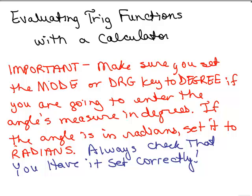Usually there is a key, either a MODE or a DRG key. If you want to enter the angle in degrees, you've got to make sure you have set that in degree mode. If you're going to enter an angle in radians, you're going to set it to the radian mode. Always check that you have it set correctly before you enter.